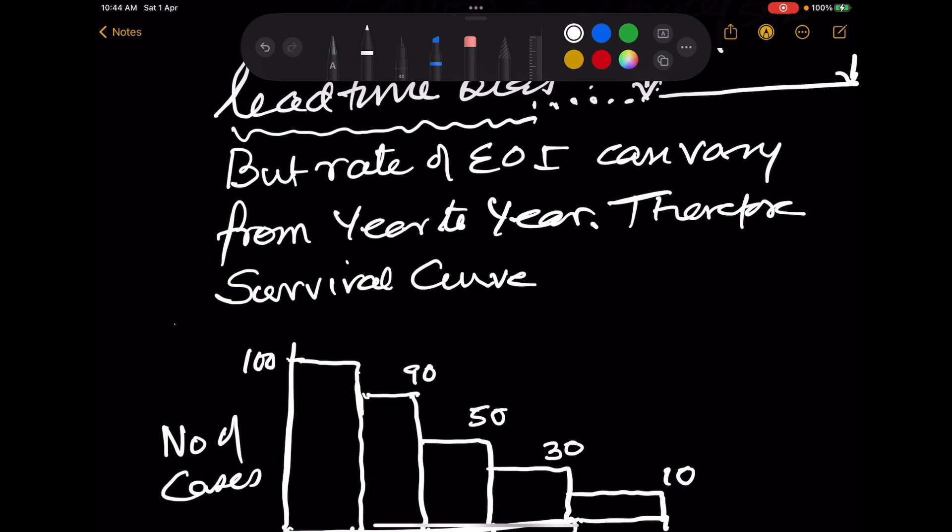But the rate of event of interest can also vary from year to year. So we cannot say that it is constant. It is not a straight line. It can be more or less. Ultimately you may get the same. But let us try to therefore denote it by a survival curve.